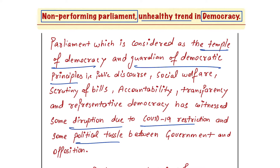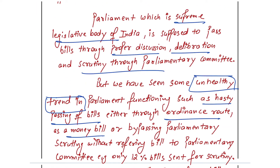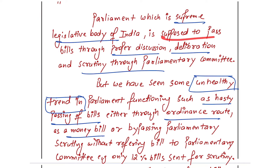Political tussle exists and COVID-19 restrictions have also prevented parliament from functioning properly. Parliament, which is the supreme legislative body of India — from here I have started my body — is supposed to pass bills through proper discussion, deliberation and scrutiny through parliamentary committees. Parliamentary committees exist specifically for the scrutiny of bills that the government brings to parliament.